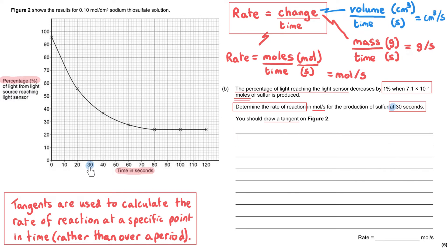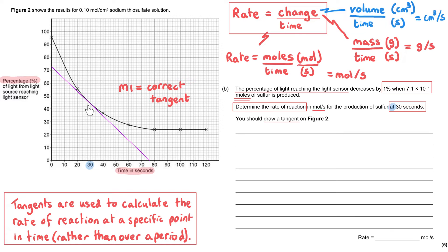To draw the tangent, find 30 seconds on the x-axis, go up to the curve at that point, and draw a straight line that matches the gradient of the curve at that point — the tangent continues straight while the graph curves away. My strong recommendation is to always extend the tangent to both axes where possible, because that makes reading the gradient much easier. The tangent meets the curve at 30 seconds but continues in a straight line to both the x-axis and the y-axis.